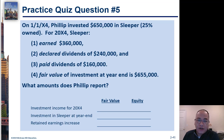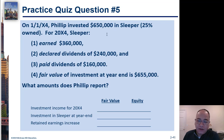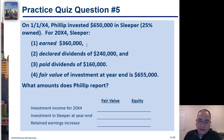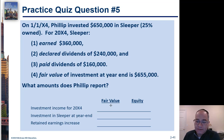So here's a little exercise. Phillip invested $650,000 in Sleeper, which is 25% owned. In 20X4, Sleeper earned $360,000, declared dividends of $240,000, and paid dividends of $160,000. The fair value of the investment at year end is $655,000. So how much does Phillip report? Let's go one method at a time.